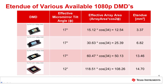Because of this property, the component with the smallest etendu in the system will dictate the throughput of the system. Generally, this is assumed to be the DMD, and a system design is started with this component. The calculation of etendu of some various available 1080p DMDs is shown in the table.